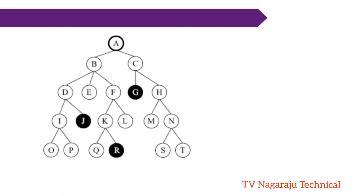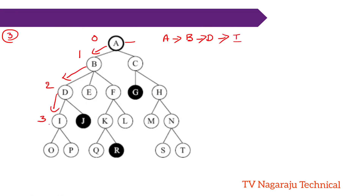Now let's explain Depth-Bounded DFS with an example. Initially we are at root node A with depth limit equal to three — depth levels zero, one, two, three. We start at A, move to B, then B to D, then D to I. At I the depth limit is reached. Since I is not the goal node and the depth limit is reached, we backtrack to parent D, then move to J.